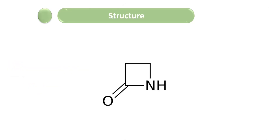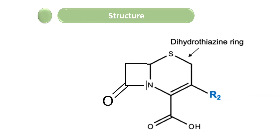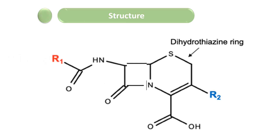Now let's talk about the structure of cephalosporins. Like the penicillin group, cephalosporins have a beta-lactam ring. A six-member dihydrothiazine ring is attached to the beta-lactam ring — this ring is also called the cephem ring. There are two side chain groups, R1 and R2: the R1 group is attached to the beta-lactam ring, whereas the R2 group is attached to the dihydrothiazine ring.